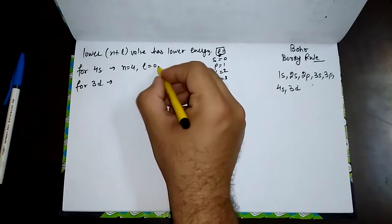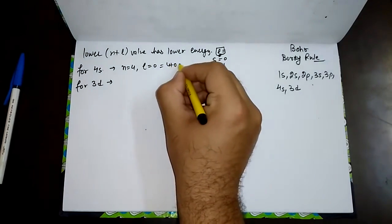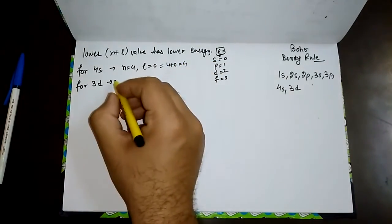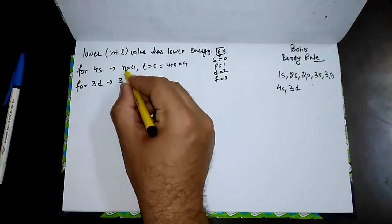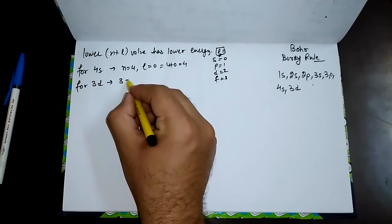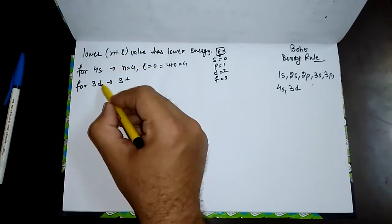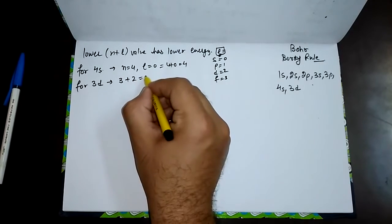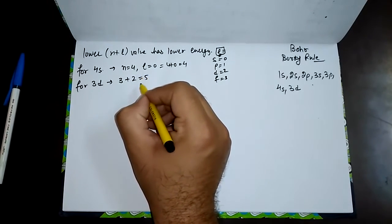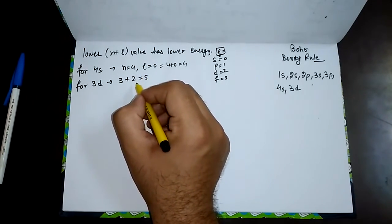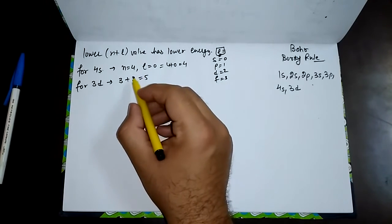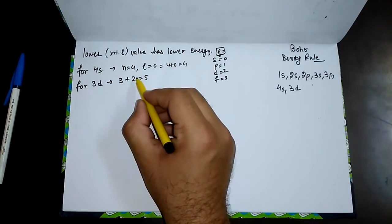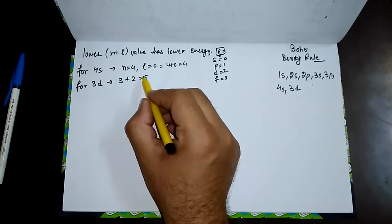Similarly, for 3d, the value of n is 3 plus the value of l, which for d is 2, so 3 plus 2 equals 5. According to this rule, the 4s orbital has the lower value, so it has lower energy than 3d. Therefore, we first fill the 4s orbital instead of 3d.